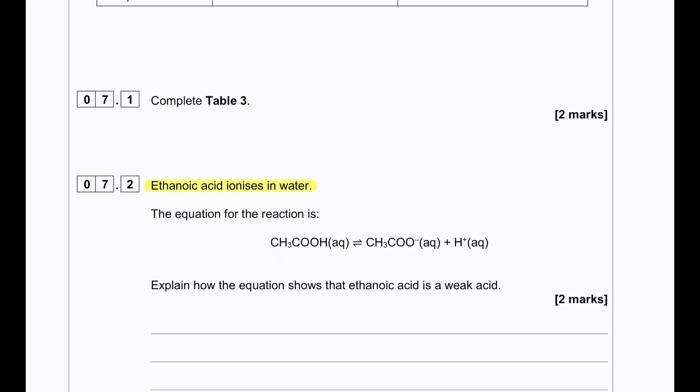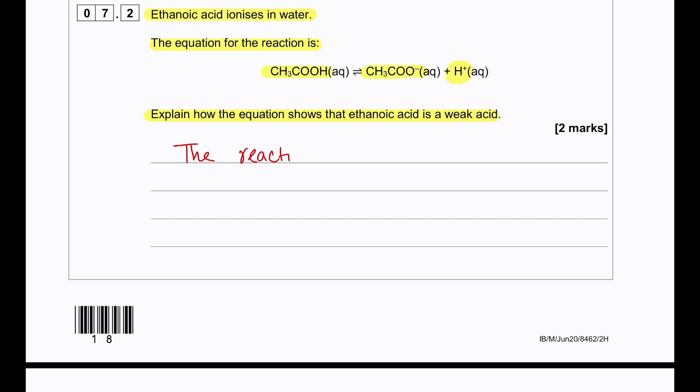Ethanoic acid ionizes in water. The equation for the reaction is ethanoic acid turning into ethanoate ion and hydrogen ion. Explain how the equation shows that ethanoic acid is a weak acid. In this particular equation we can already see that there is a reversible sign. The reversible sign shows that there is a partial ionization.